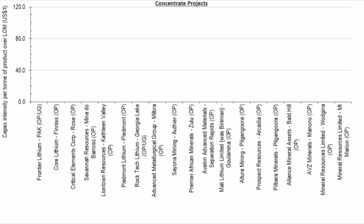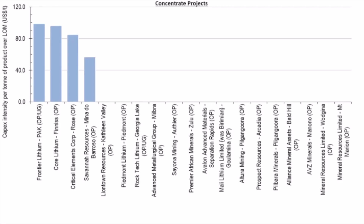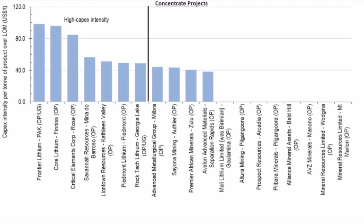Our final chart today looks at the concentrate projects. Here we have a bigger data set, so we have divided the peer group into three categories: high, mid, and low. High capex intensity projects vary from 98.5 US dollars per tonne to 49.2 US dollars per tonne.